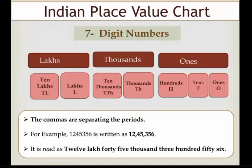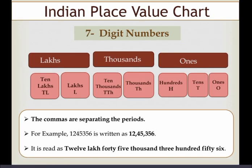Here you have been given a place value chart of seven-digit numbers. As you can see, there are three periods: ones, thousands, and lakhs.